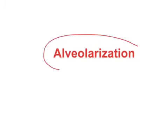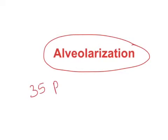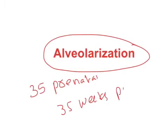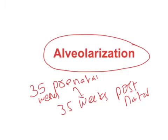Now, alveolarization — basically it is an increase in the number of alveoli. This alveolarization will be going on from 35 weeks of prenatal age to 35 weeks of postnatal age. During this period there will be an increase in the number of alveoli. This alveolarization process needs normal amounts of thyroid hormones.